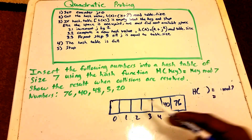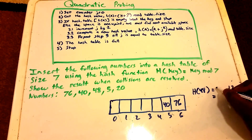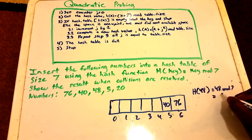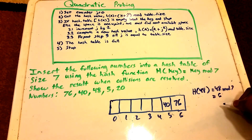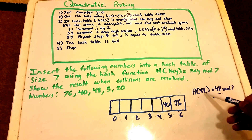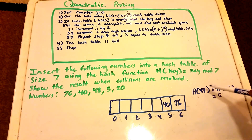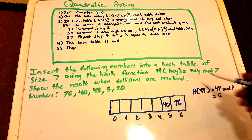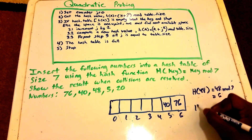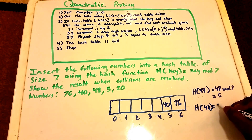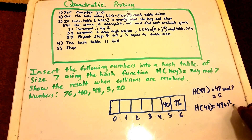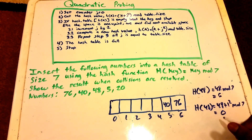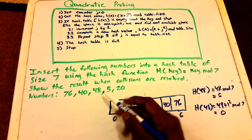Next we want to insert 48. Using the hash function: 48 mod 7 gives us the value 6. We now have a collision — two different keys mapping to the same index. So we use our quadratic probing algorithm, incrementing J to 1: H(48) = (48 + 1²) mod 7 = 49 mod 7 = 0. So at index 0 we place the value 48.